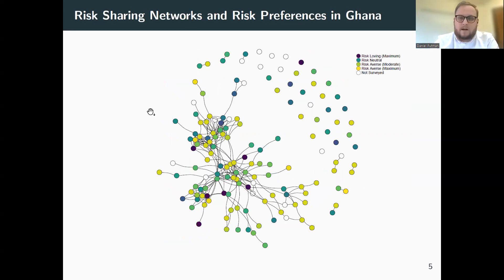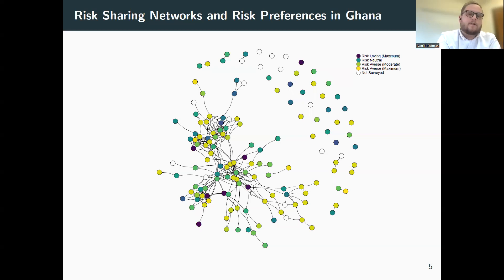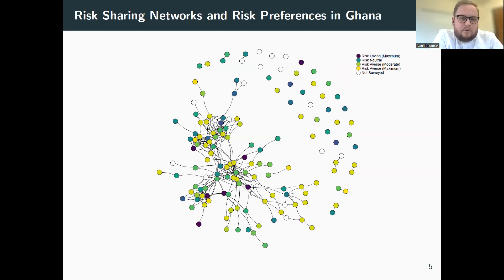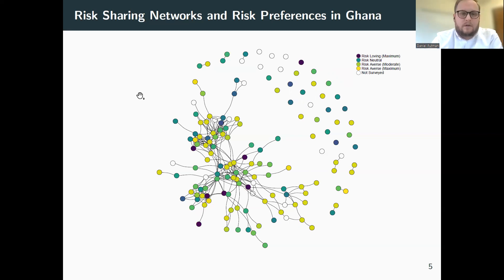Here is the actual data I work with — one of the villages in my sample. This village network has a connection between people if they trust each other and if they've exchanged gifts. You also have measures of risk aversion: purple represents risk-loving people, teal is risk-neutral, green represents more risk-tolerant people, and bright yellow represents the risk-averse people.